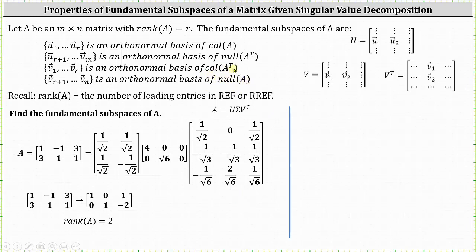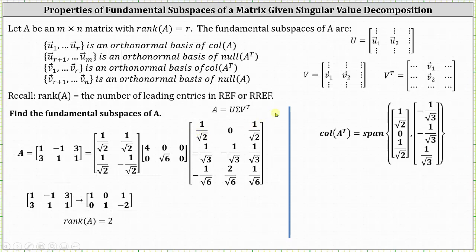The column space of A transpose and the null space of A involve the V vectors. We find the V vectors in the rows of V transpose. The set containing the vectors V sub one and V sub two is an orthonormal basis for the column space of A transpose, or the row space of A. We find these two vectors using the first two rows of V transpose, and therefore we can say the column space of A transpose, or the row space of A, is equal to the span of the set containing the vectors from the first two rows of V transpose.